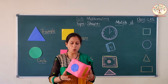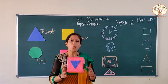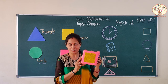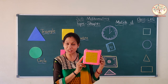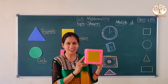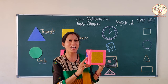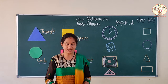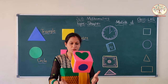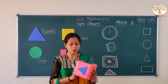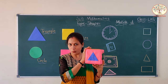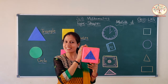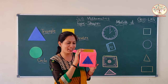Now, let's see what we get. Which shape is this? Square. Very good. Now, let's see. Which shape is this? Triangle. Very good.